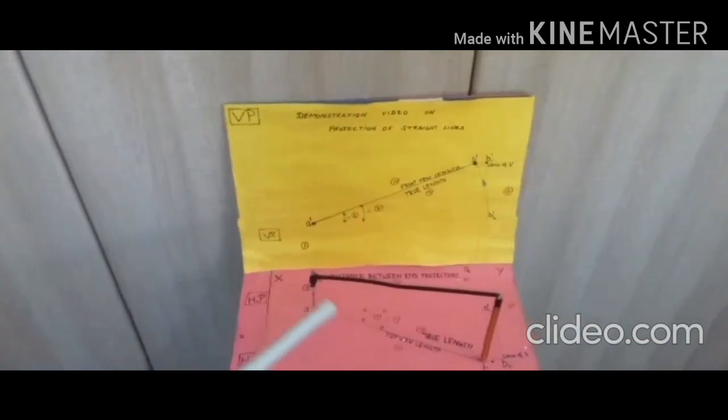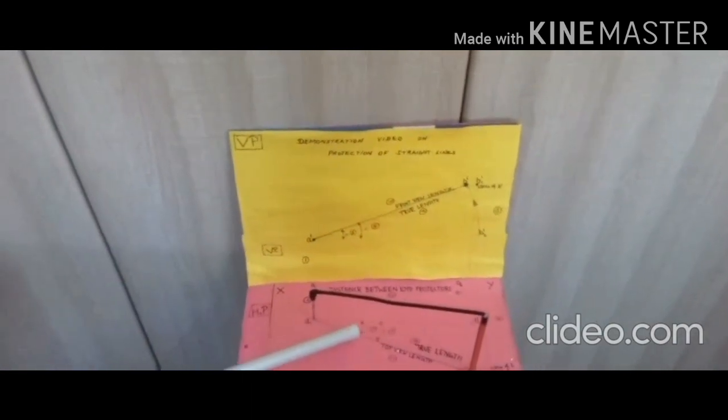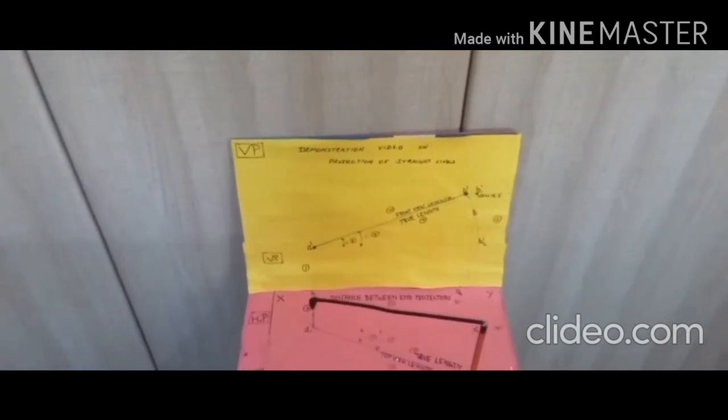Step number four: draw the two locus lines, one from B' on VB as locus of B and another line from B.